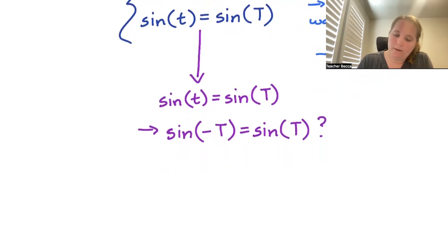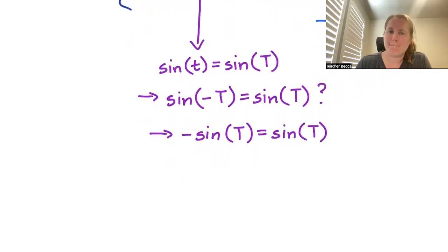Or in other words, where does negative sin(T) equal sin(T)? Remember, sine is an odd function that negative just pulls out front.